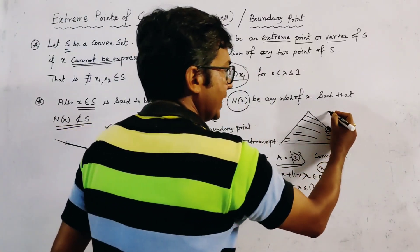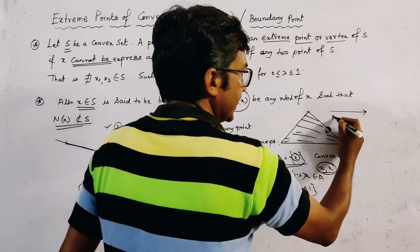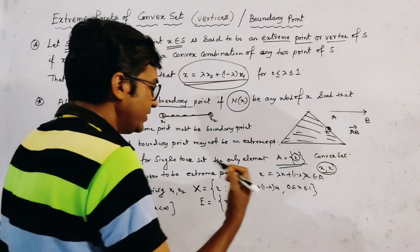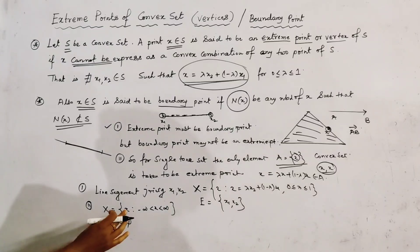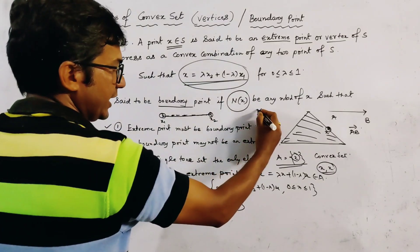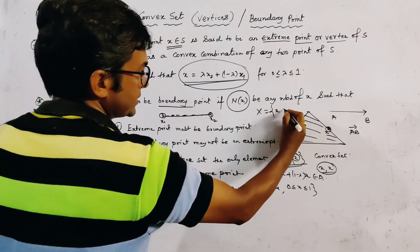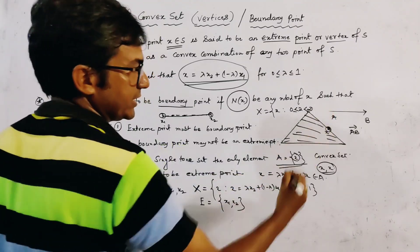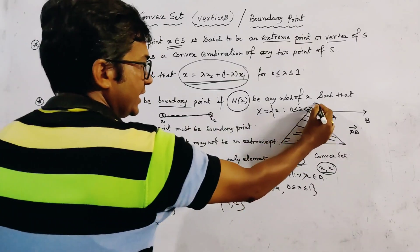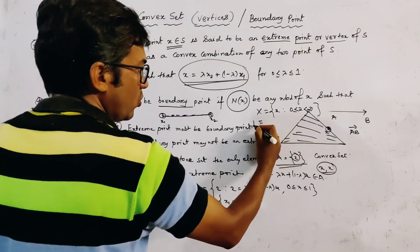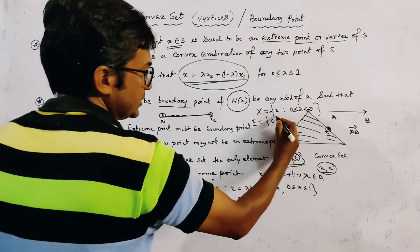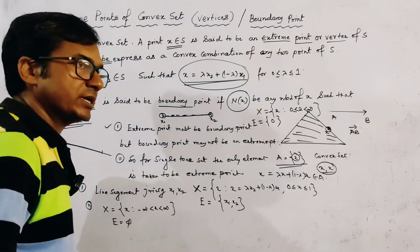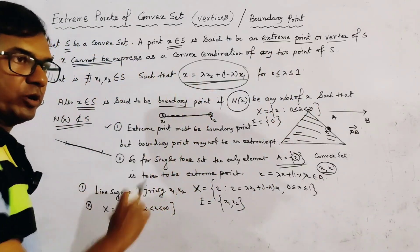If we consider a ray AB, defined as the set X such that 0 ≤ X < infinity, then clearly it has only one extreme point, which is 0, and no other extreme point. But all the points on this ray are boundary points.